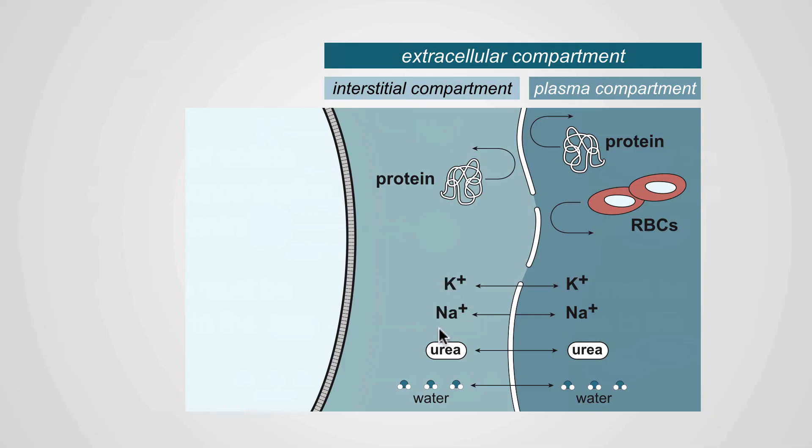Potassium, sodium, nonpolar molecules, and water all cross with very little restriction, while proteins like albumin cannot cross this membrane, and cellular components like red cells, white cells, and platelets are equally restricted from crossing.